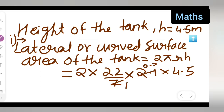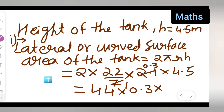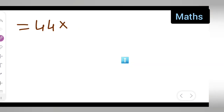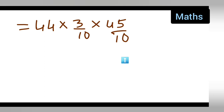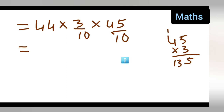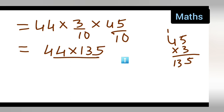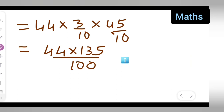Simplifying: 7 goes into 2.1 giving 0.3. So we get 2 × 22 = 44, multiplied by 0.3, multiplied by 4.5. Removing decimals: 44 × 3/10 × 45/10 = 44 × 135 upon 100.